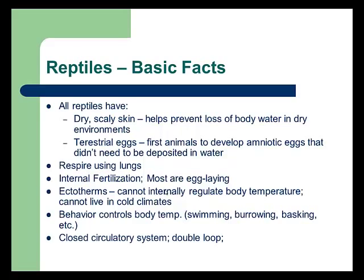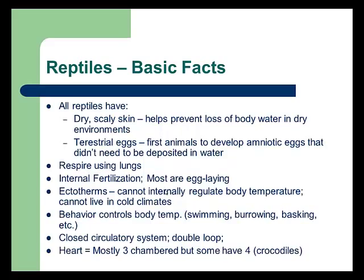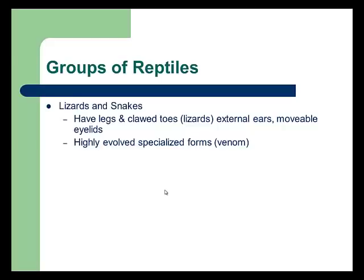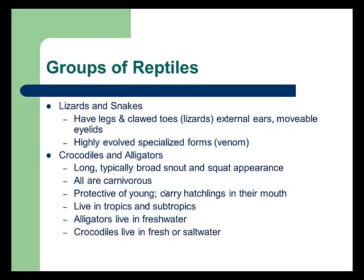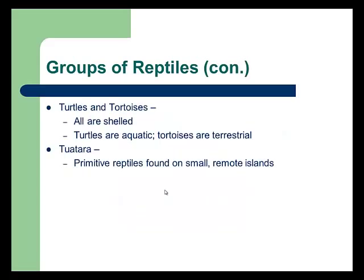Reptiles also use a closed circulatory system with a double loop. Most have three-chambered hearts, though some — like crocodiles — have four chambers. We'll explain what the double loop and chambers mean in class. Groups of reptiles include lizards and snakes, crocodiles and alligators, turtles and tortoises, and the tuatara — a primitive reptile found on some small remote islands.